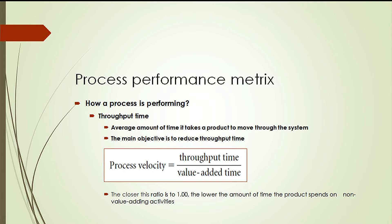Process performance metrics is the measurement of different process characteristics that tells how a process is really performing. Throughput time is the average amount of time it takes to move a unit through the system, and the main objective of a company should be to reduce it. Process velocity is computed as a ratio of throughput time to value-added time. The closer this ratio is to one, the lower the amount of time the product spends on non-value-adding activities.